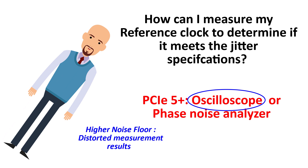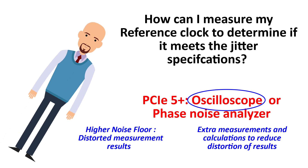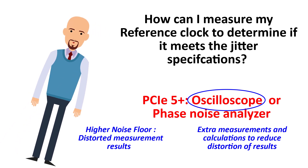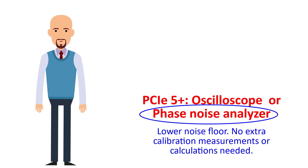In an attempt to attenuate this error, complex methods have been devised to take various calibration-type measurements with the oscilloscope being used. For PCIe version 5 and beyond, the Standards Committee decided that because of the inherently lower noise floor of phase noise analyzers, they too should be an additional available option for measuring the jitter.